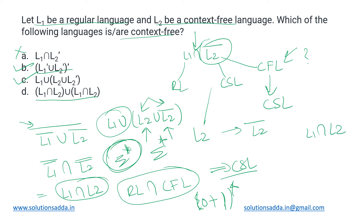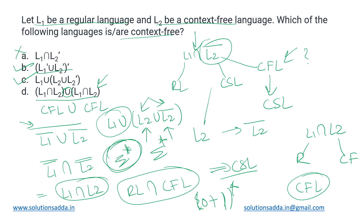Option D is (L1 intersection L2) union (L1 intersection L2). L1 is regular and L2 is context-free, so their intersection is CFL. The same holds on the other side. Finally, we take the union of CFL union CFL, which is also a CFL. So option D also represents a context-free language. Therefore, options B, C, and D are all context-free languages — that is our answer.